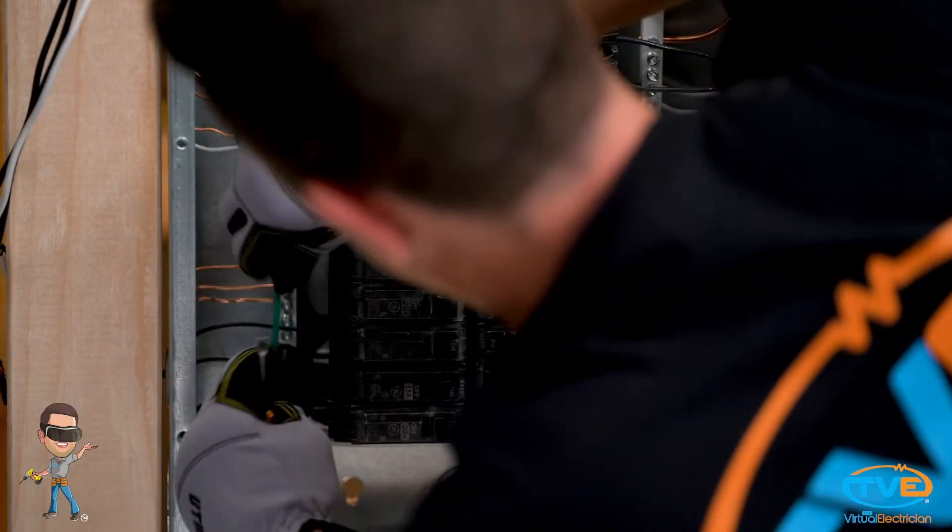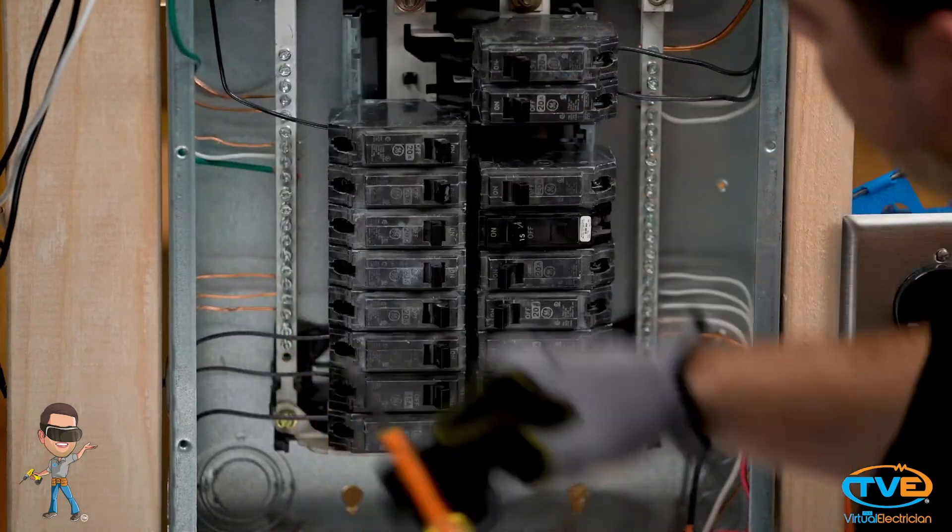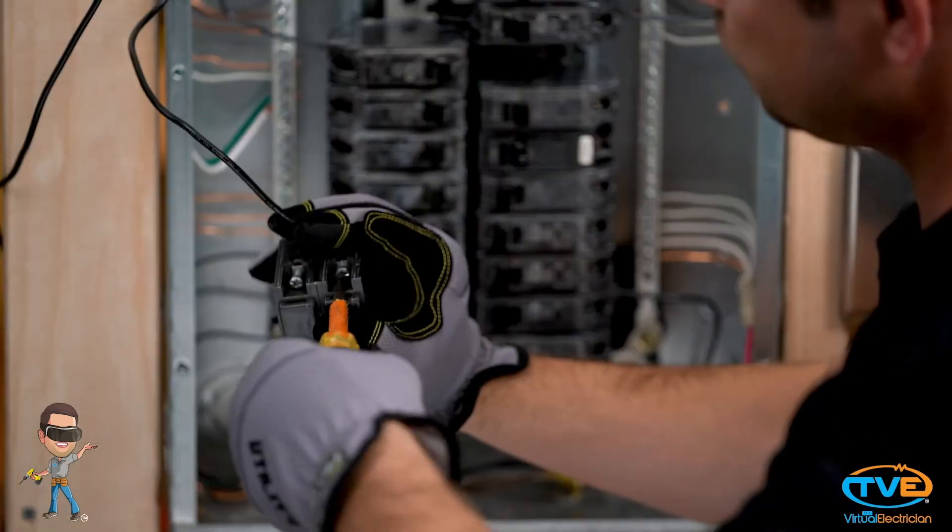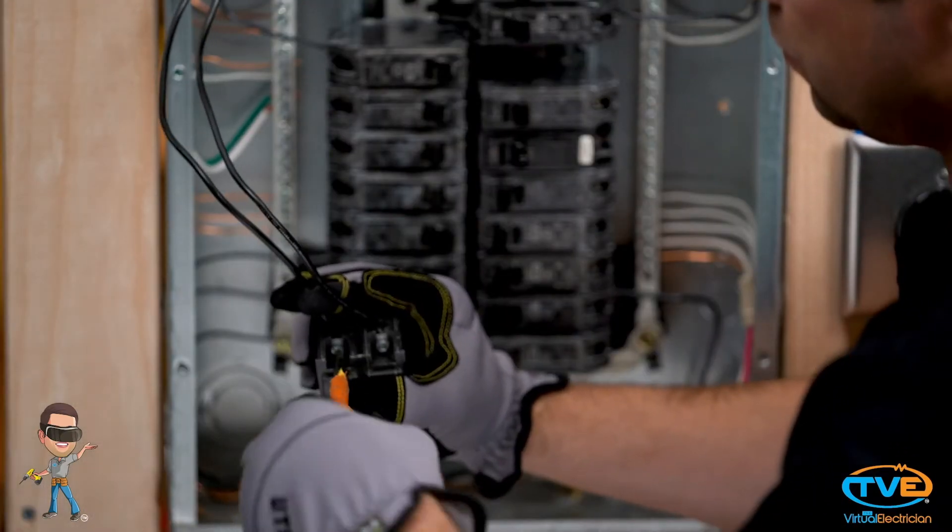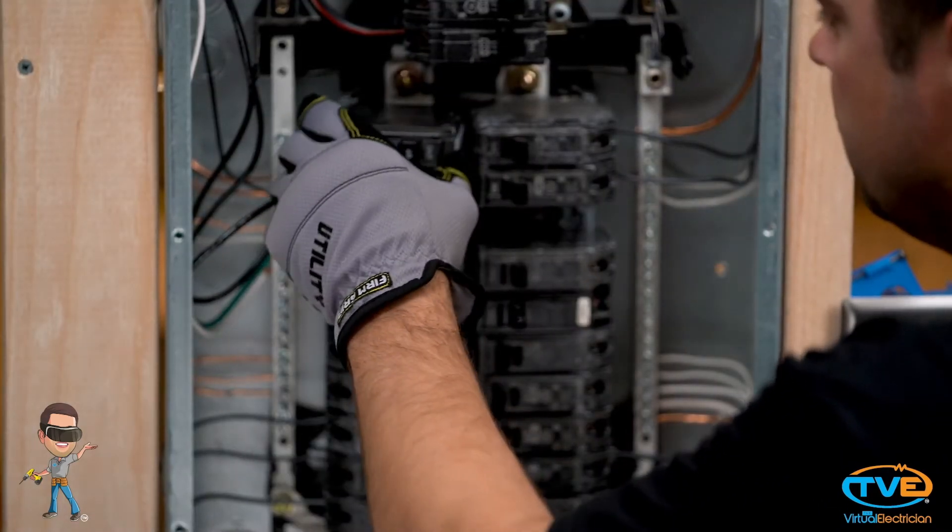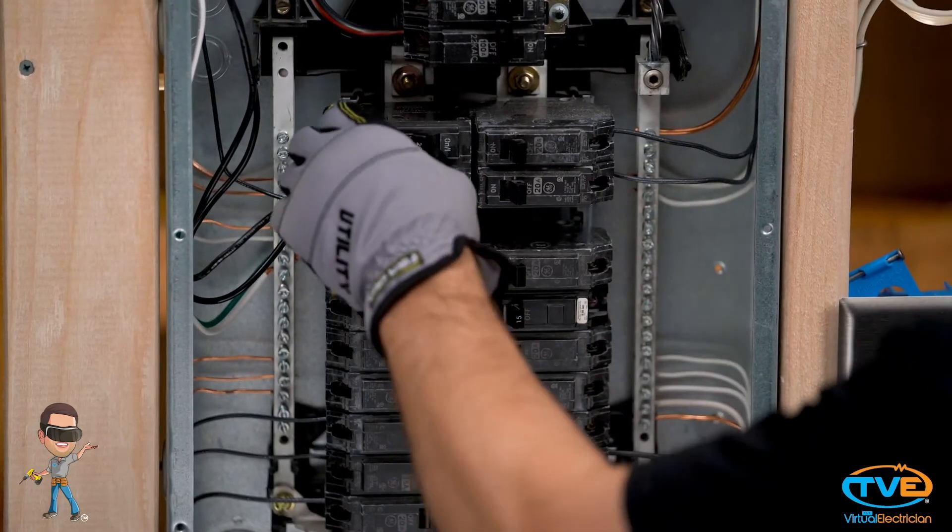Next, you wire it up like you would a 240-volt circuit. Ground first, then neutral, and then the two other wires will go on the breaker. One that will protect phase A and the other that will protect phase B.